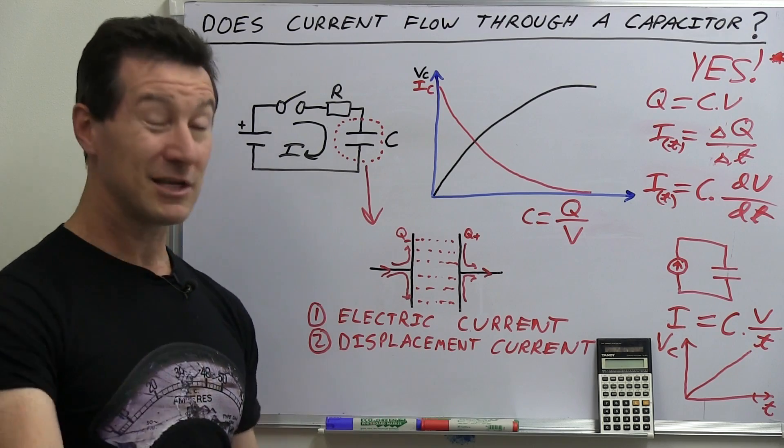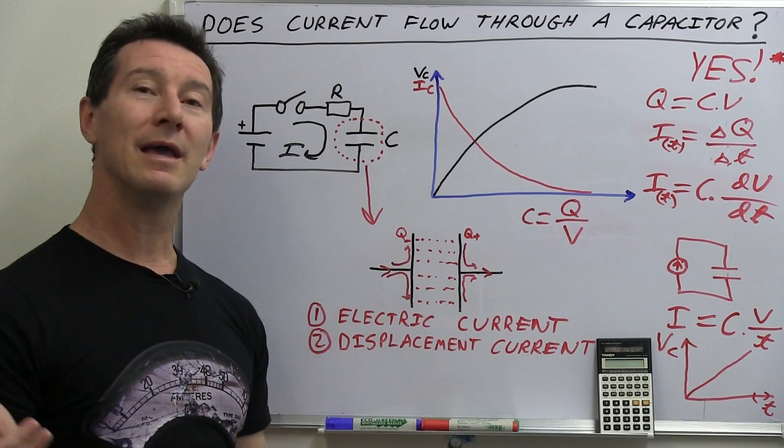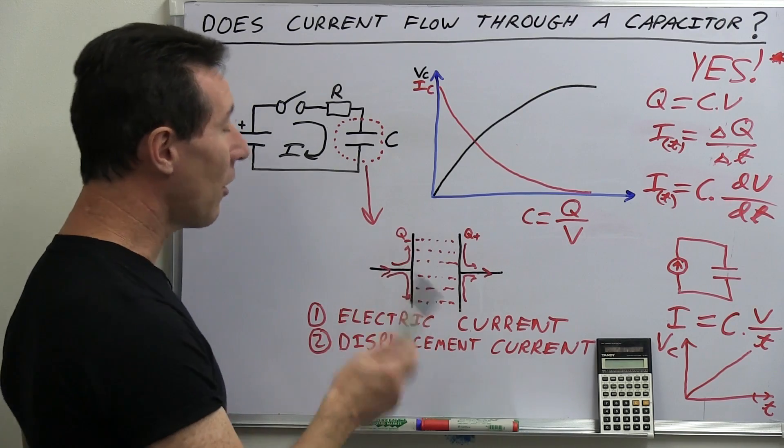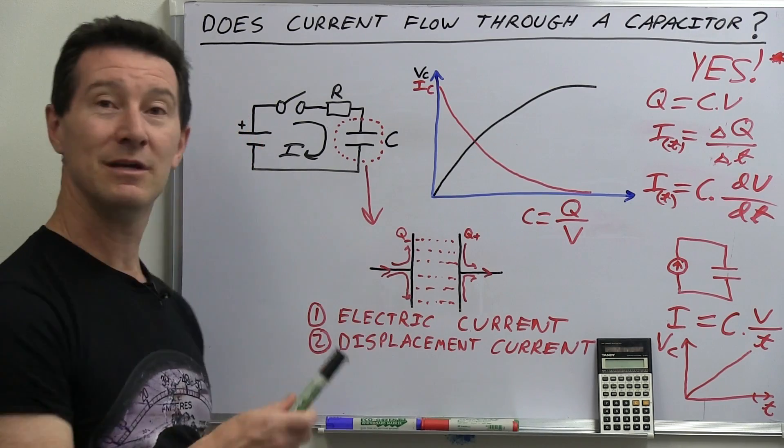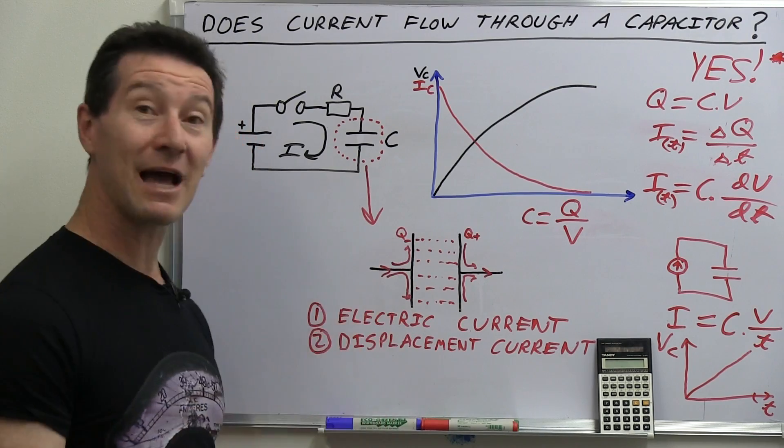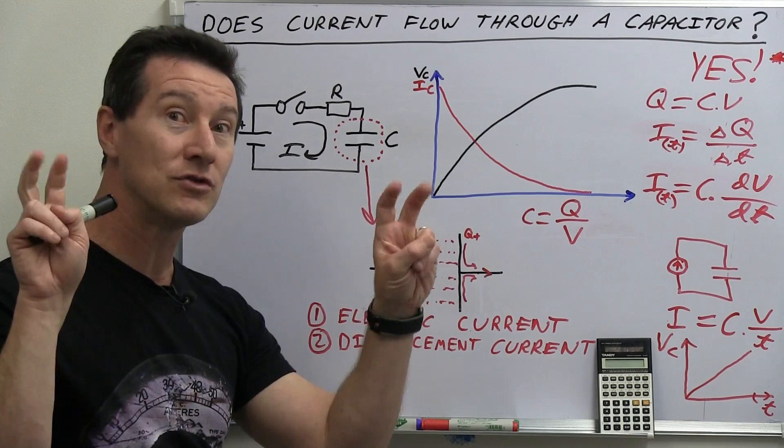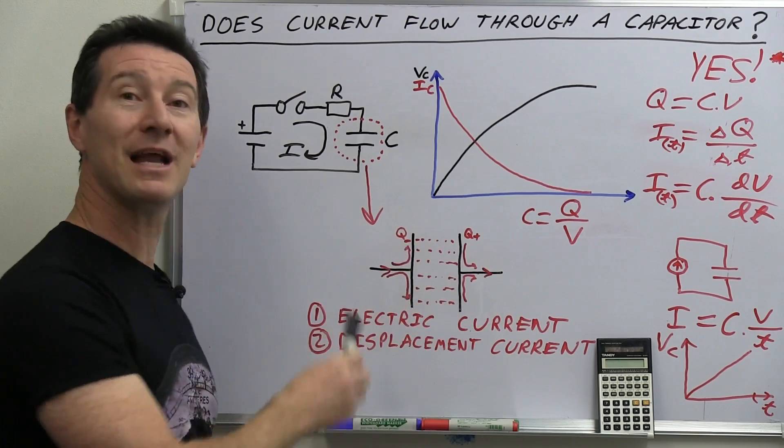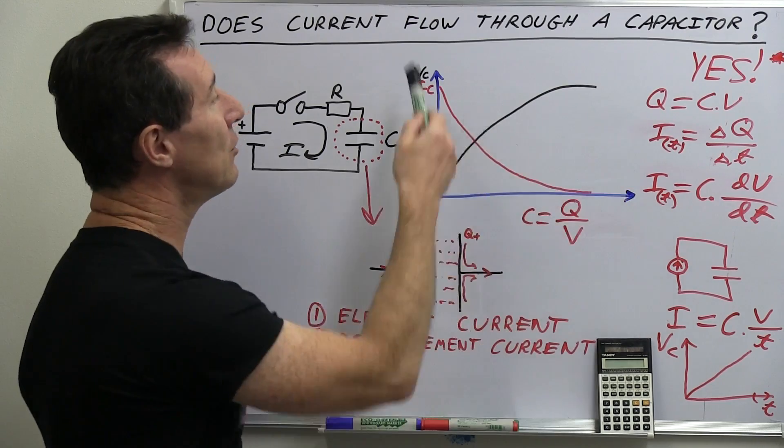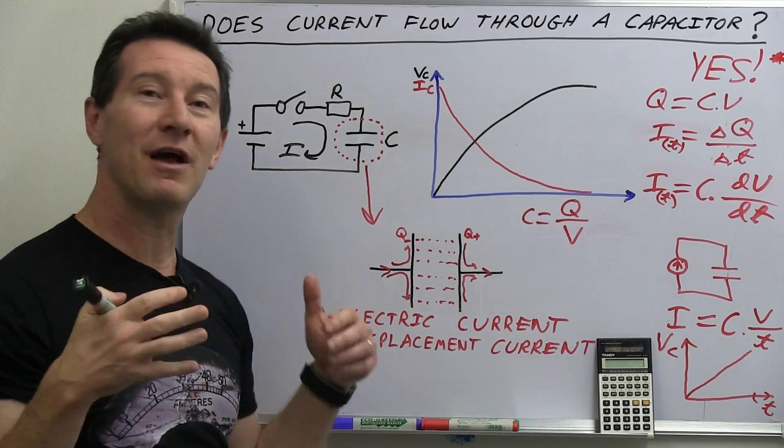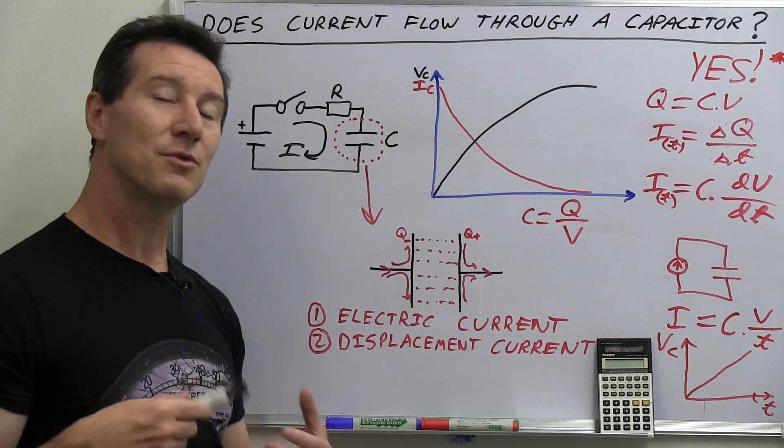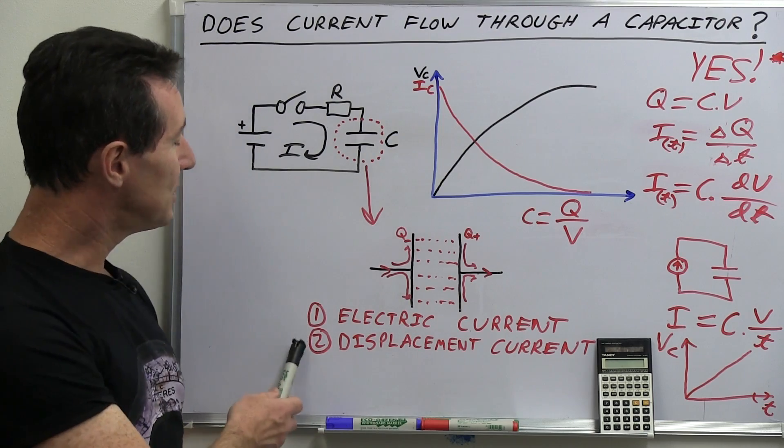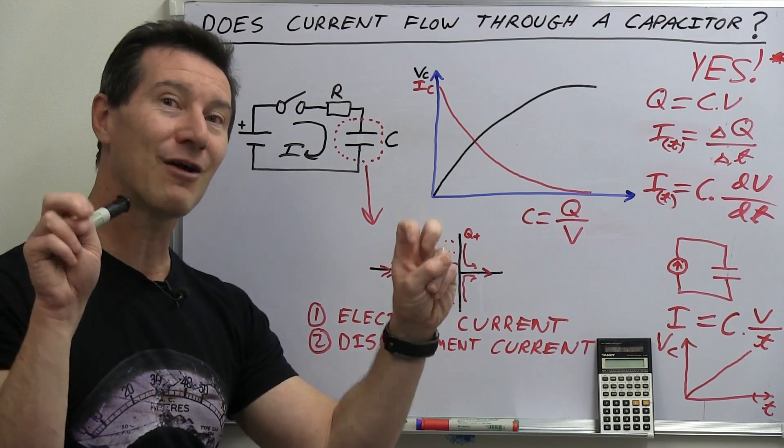And to cut the long story short, to make it all work, he had to come up with the concept of a displacement current that, in this case, flows through a capacitor. And that's how what we're using up here in all of our general electronics equations in a practical sense.